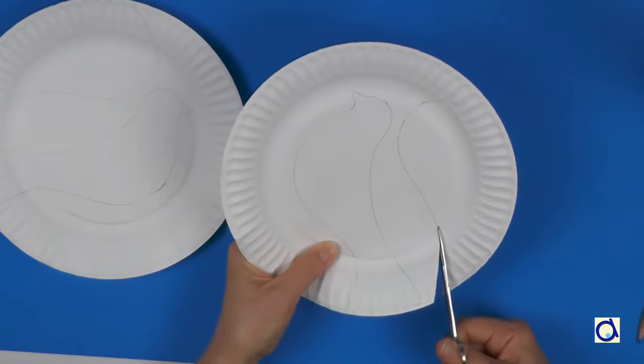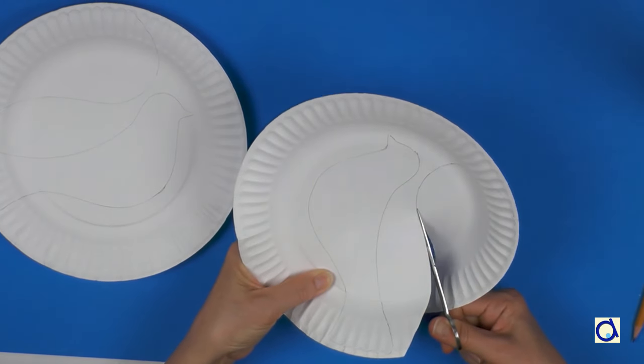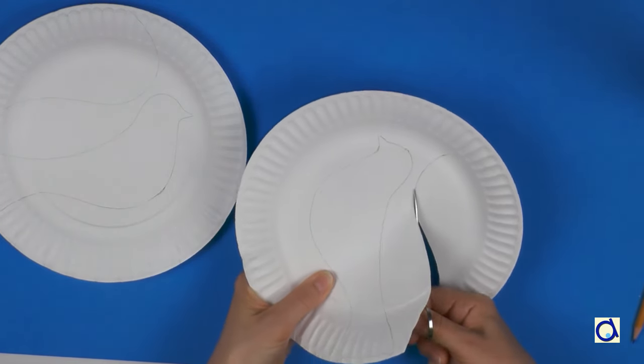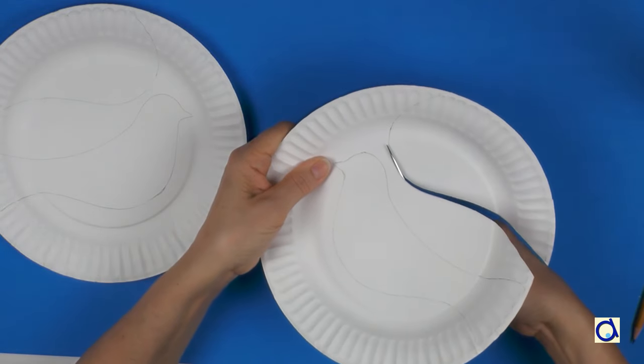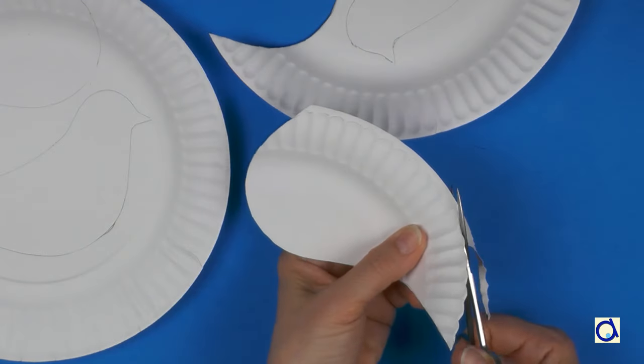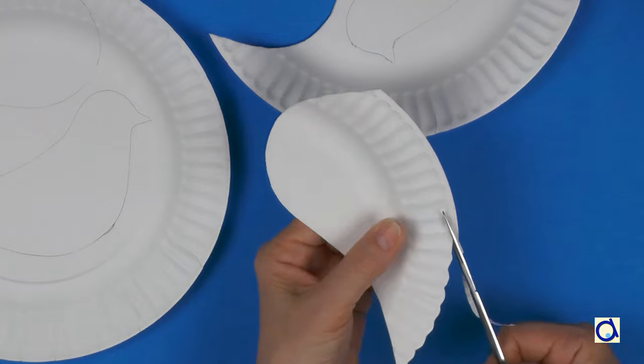When you have finished drawing the two sides of the body and the wings, cut along the lines you have drawn. Cut the feather side of the wings and of the tail following the rounded edges of the plates.